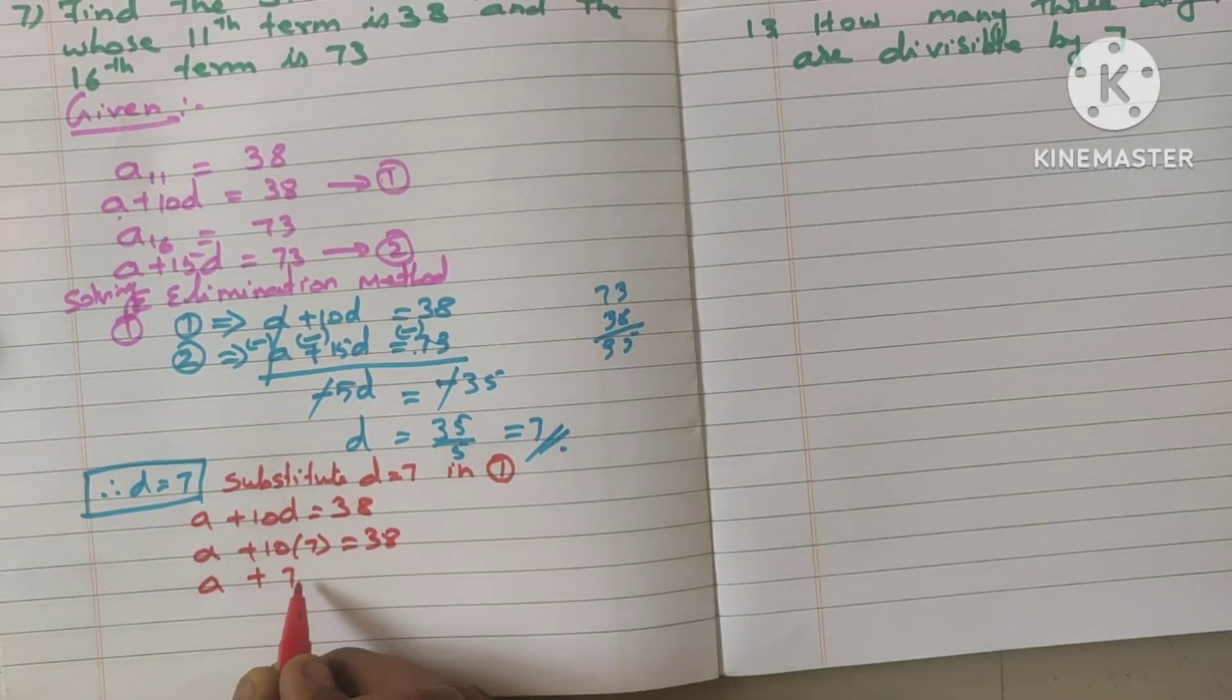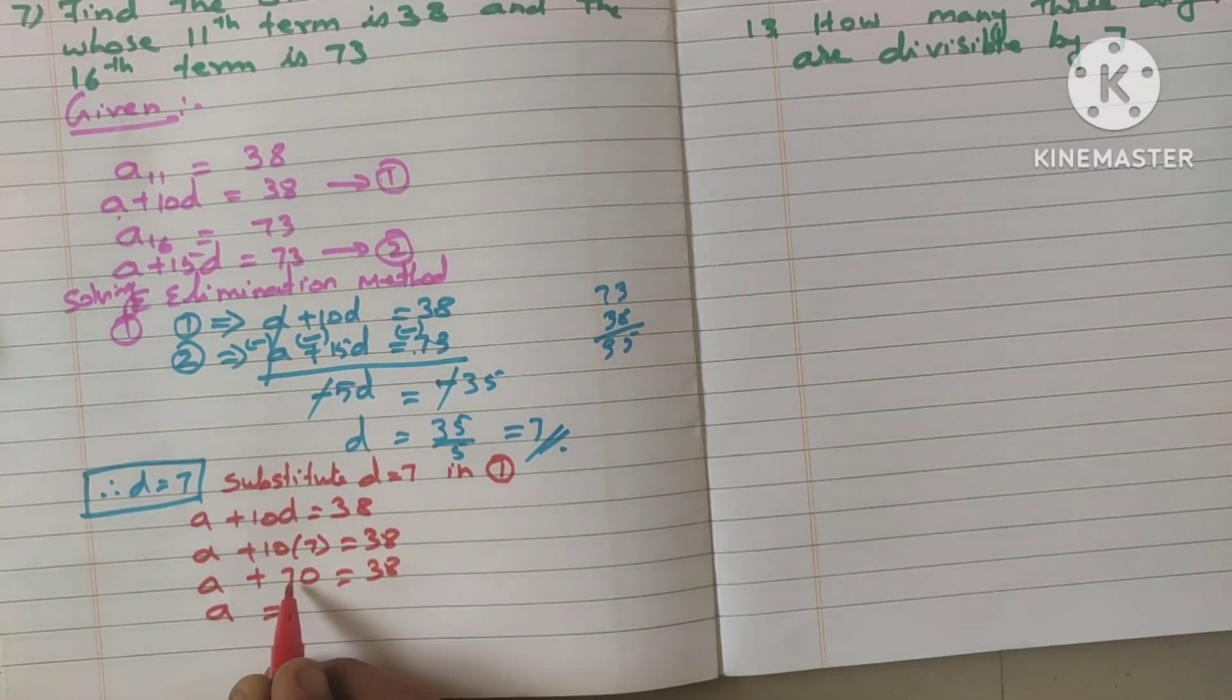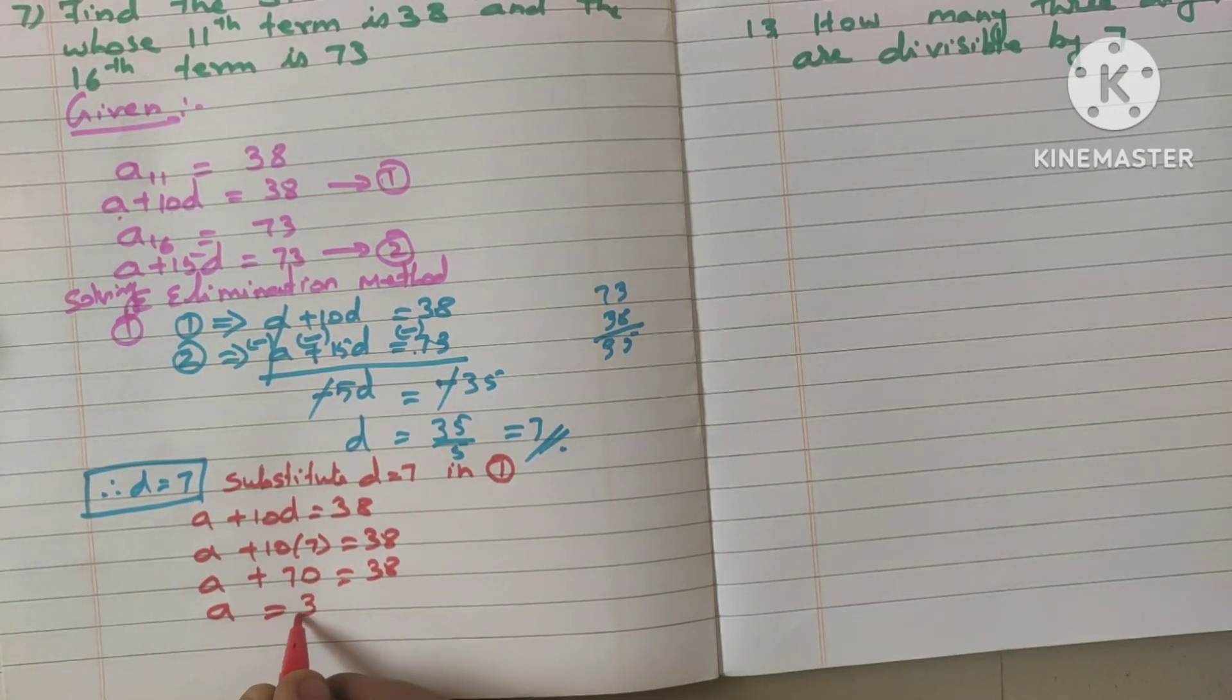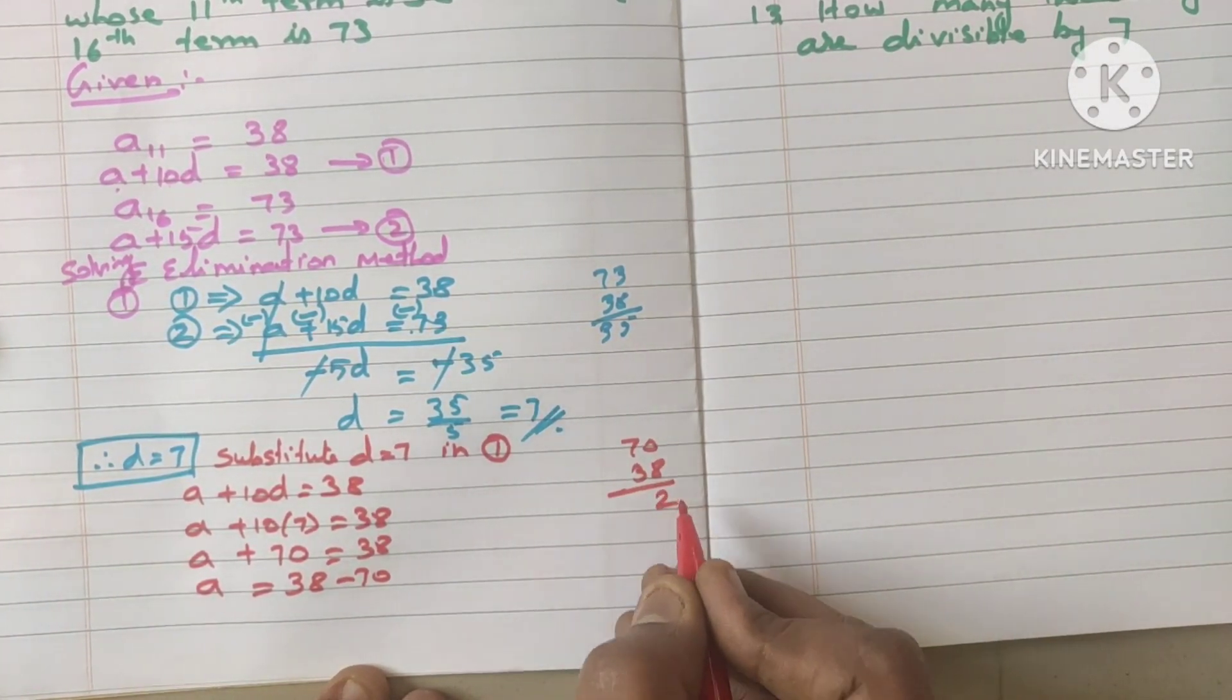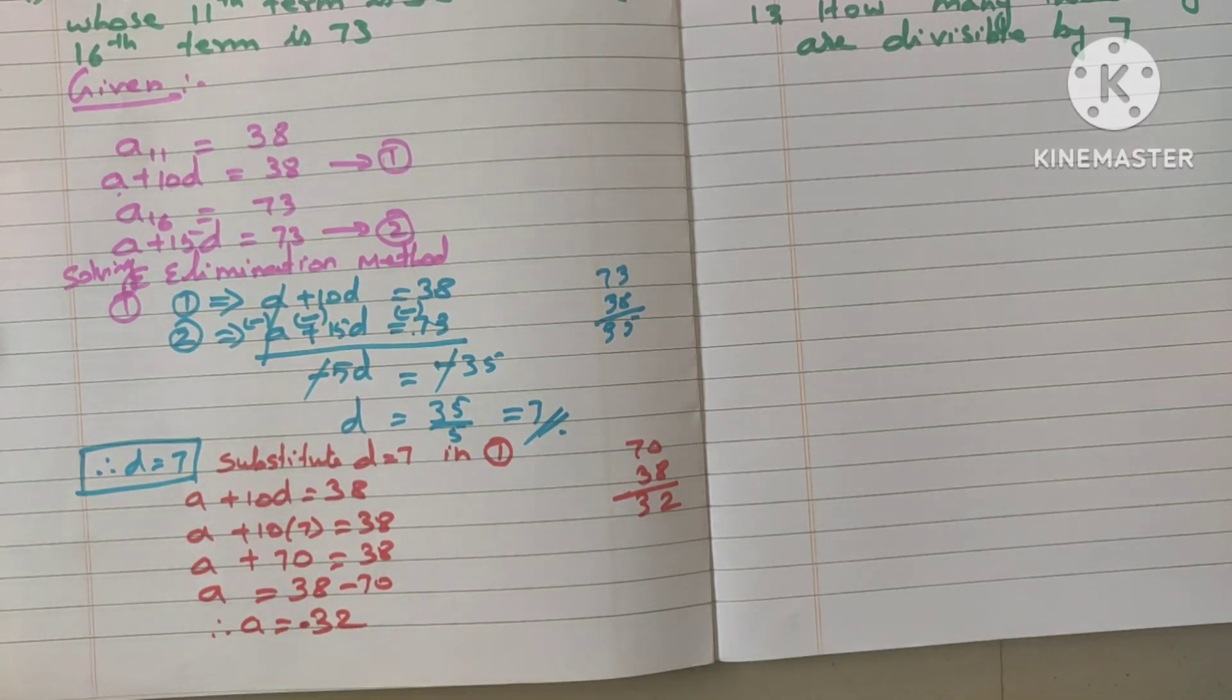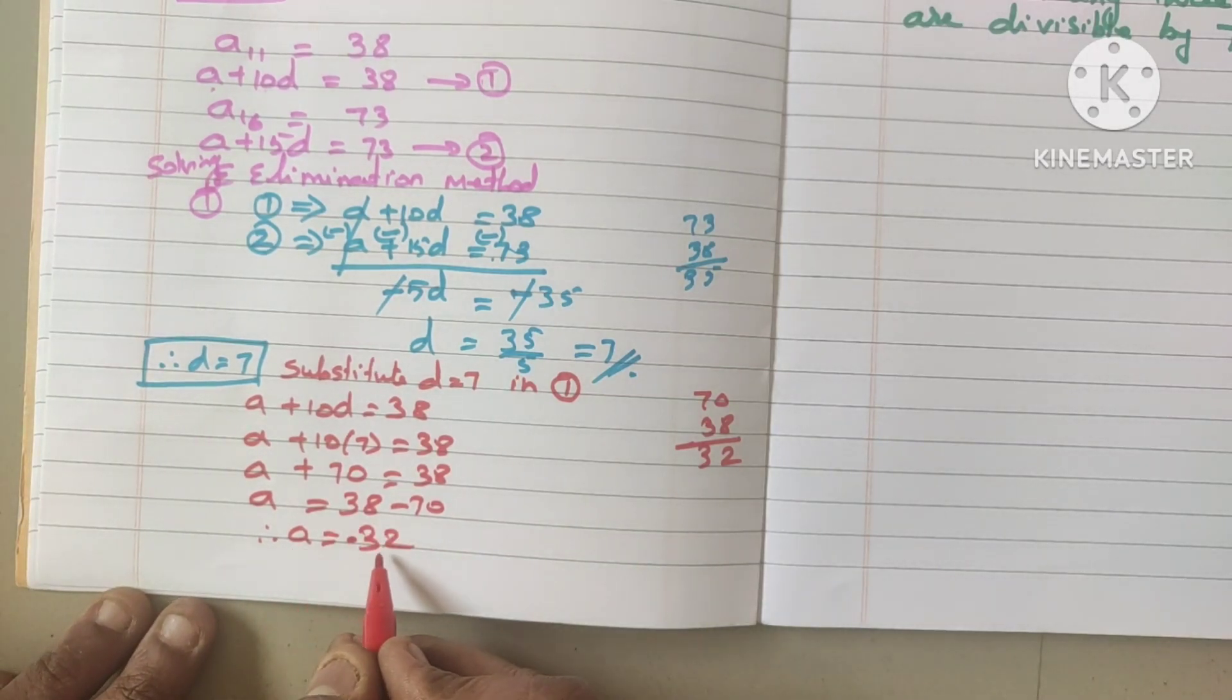A plus 70 is equal to 38. Keep A in one side. Bring this 70 this side. This is plus 70. Plus 70 will come as minus 70. So 38 minus 70. If you subtract 70 from 38, you will get 32. Therefore, A is equal to 32. That too minus 32. As I said, A is equal to minus 32.